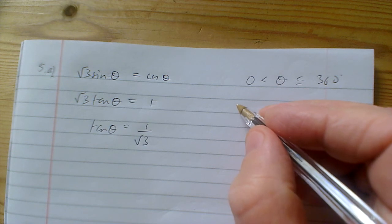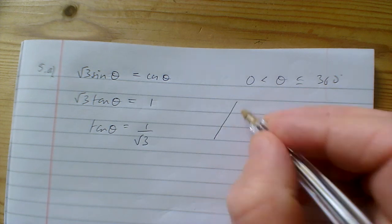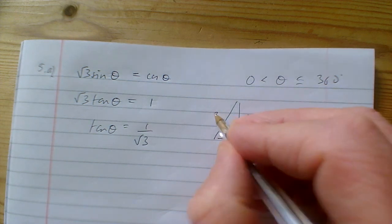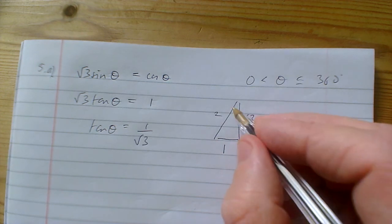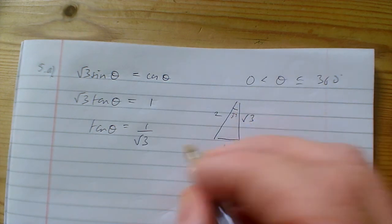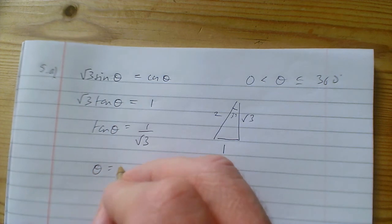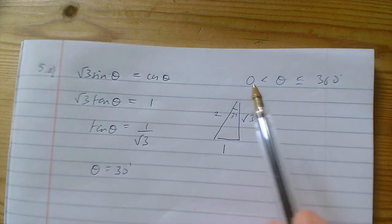This is one of the exact ratios we should know from the triangle: tan 30° = 1/√3, so θ = 30°. But we need all solutions between 0 and 360 degrees.